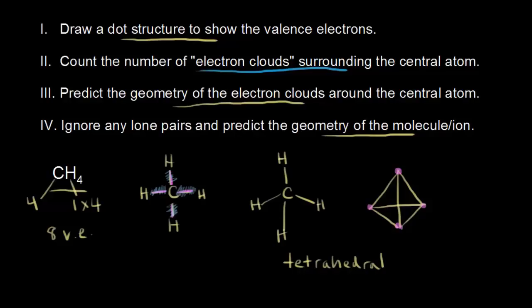So we can say that methane is a tetrahedral molecule. In terms of bond angles, our goal is to figure out what the bond angles are in a tetrahedral molecule. It turns out to be 109.5 degrees in space — that's having those bonding electrons as far away from each other as they possibly can using VSEPR theory. So 109.5 degrees is the ideal bond angle for a tetrahedral molecule.